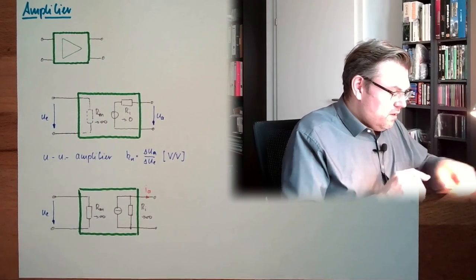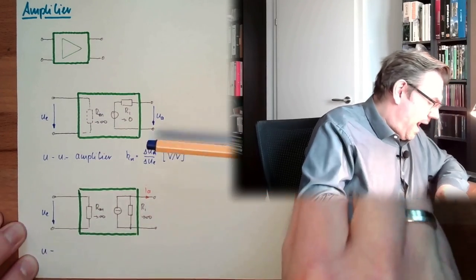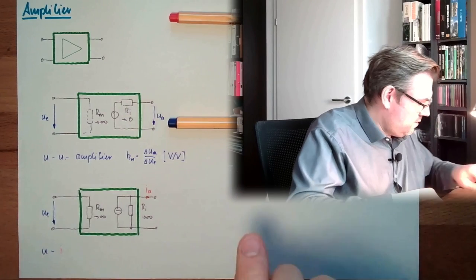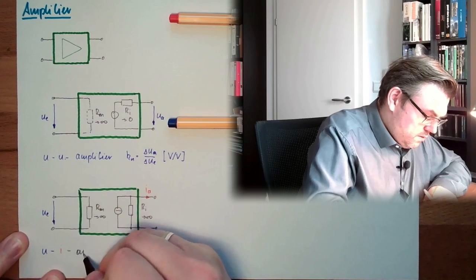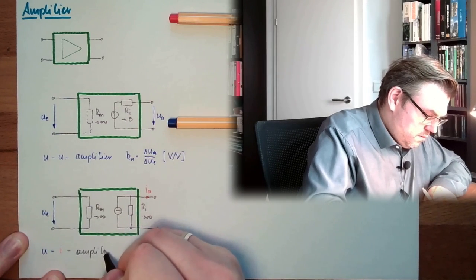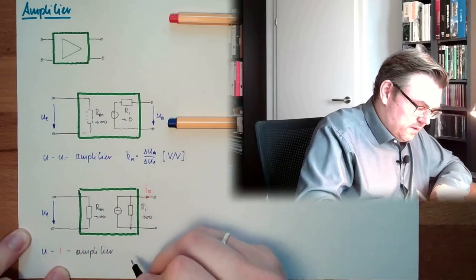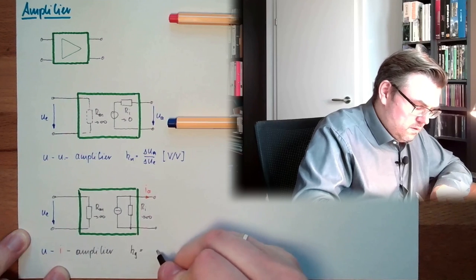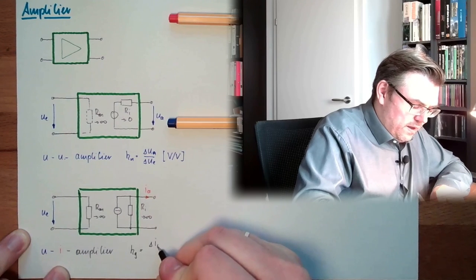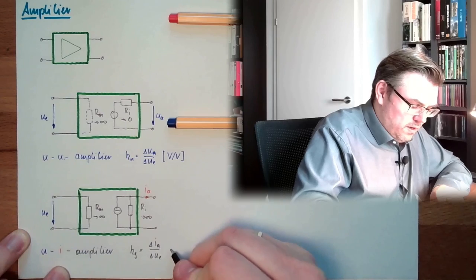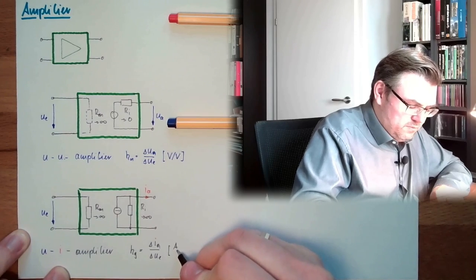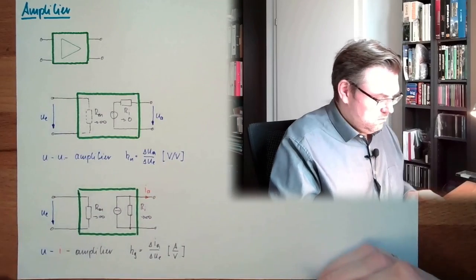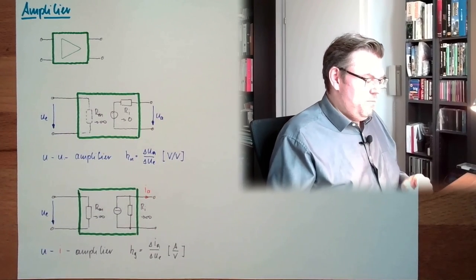And therefore, this is called UI amplifier. And the gain factor, Kg, delta Ia divided by delta Ui. So, this is amps by volt. UU amplifier, UI amplifier.